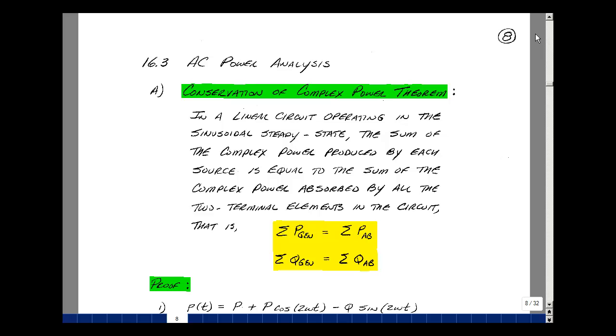Let me start by reading the theorem. In a linear circuit operating in sinusoidal steady state, the sum of the complex power produced by each source is equal to the sum of the complex power absorbed by all of the two terminal elements in a circuit.